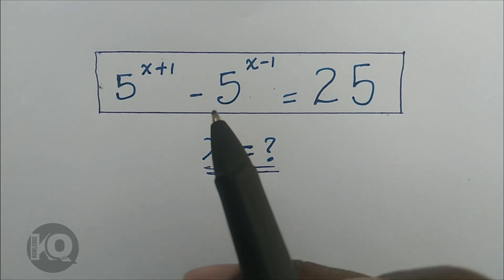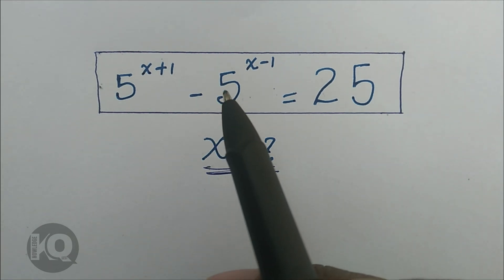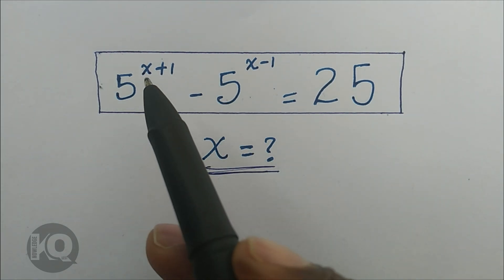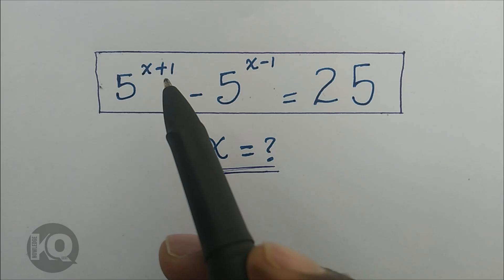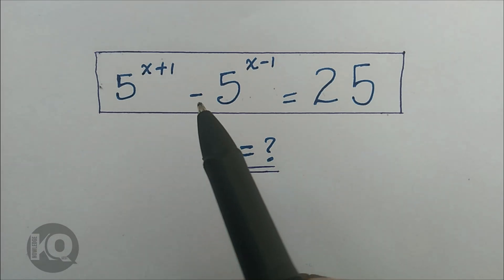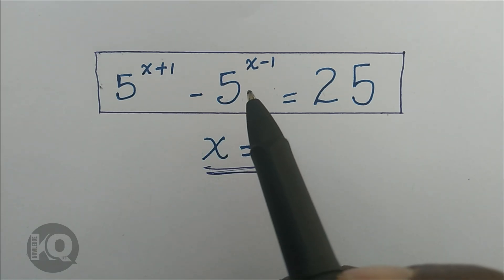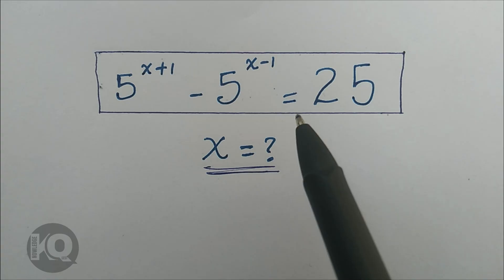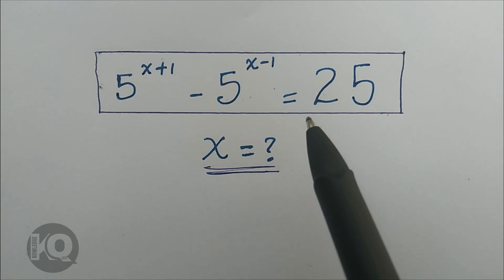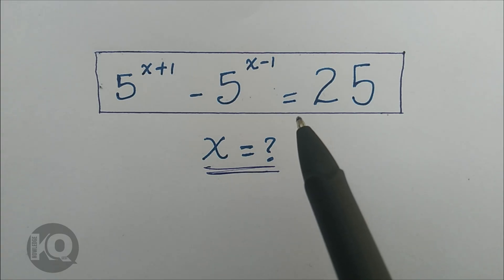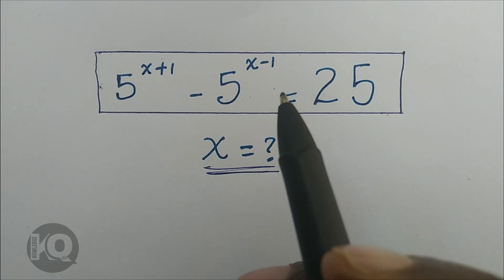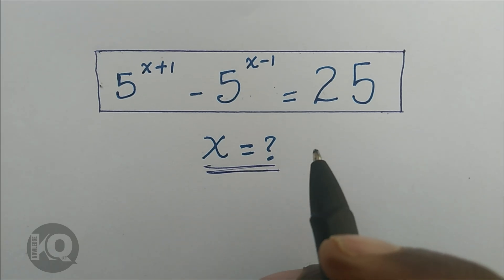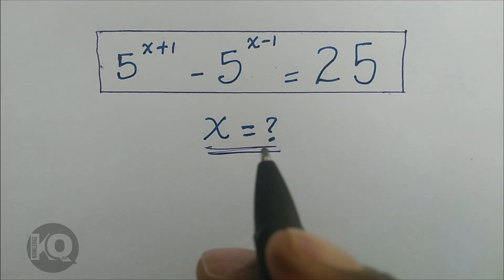Hello, you are welcome. Solve this math problem: 5 to the power of x plus 1 minus 5 to the power of x minus 1, which is equal to 25. Find the value of x.